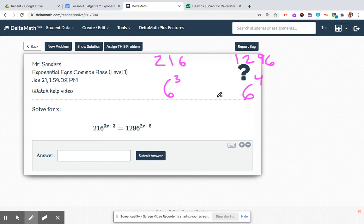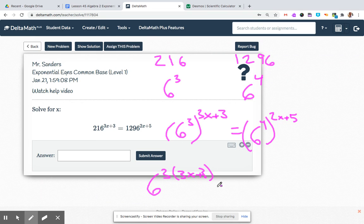All right, so it's just experimenting. I used my calculator to do that. So 6 cubed to the 3x plus 3 equals 6 to the 4th to the 2x plus 5. Exponents multiply. So 6 to the 3, don't forget your parentheses, times 3x plus 3, equals 6 to the 4, don't forget your parentheses, times 2x plus 5. Bases are the same, exponents are the same. And then solve like we've been doing, exactly the same steps to finish it off as the last one.